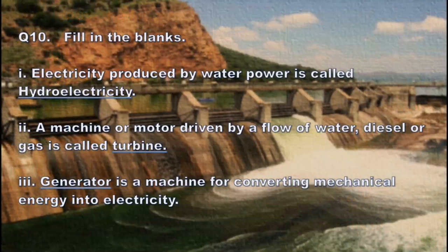And now the next question: Fill in the blanks. Electricity produced by water power is called hydroelectricity. Number 2: a machine or motor driven by a flow of water, diesel, or gas is called a turbine.